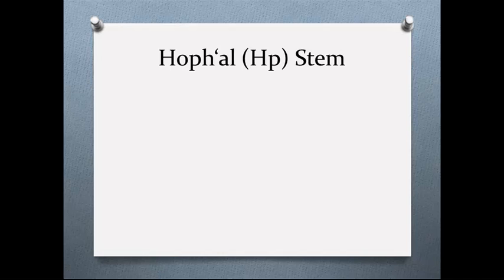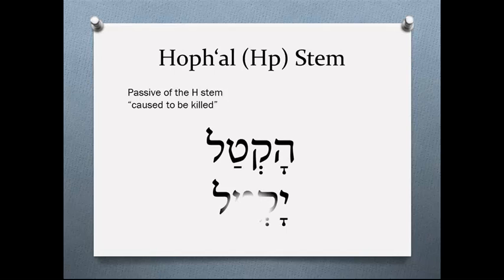There are some minor stems not worth covering here — for example, the hishtaphel, the HT-shin stem, which is only used with one word in Hebrew. The Hophal stem is the passive of the H stem — 'to cause to be killed.' What does it look like? In the perfect it has a hey on the front with a qamats qatuf — that's a short O, not an A. And in the imperfect, yoqtal, same thing: qamats qatuf, a short O.